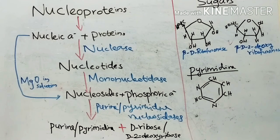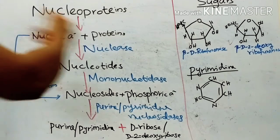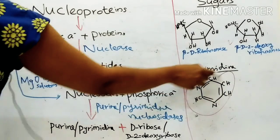Then, thymine found in DNA only. It is chemically 2,4-deoxy-5-methyl pyrimidine. Uracil found in RNA only. It is chemically 2,4-dioxy-pyrimidine. This is the structure of normal pyrimidine.